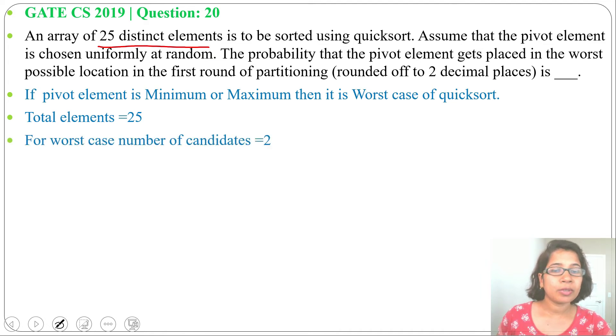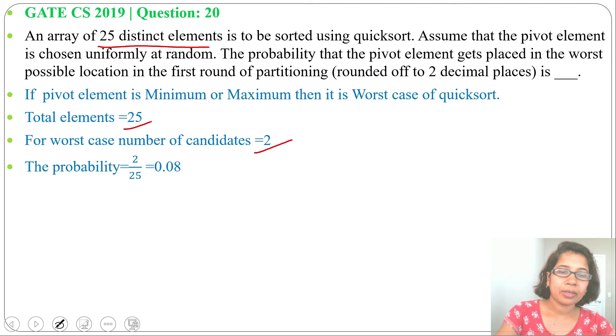For worst case, number of candidates are 2. In total elements, 25. So probability will be 2 divided by 25, that is 0.08. So answer will be 0.08.